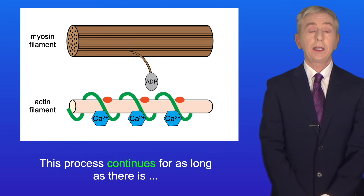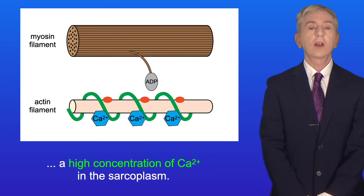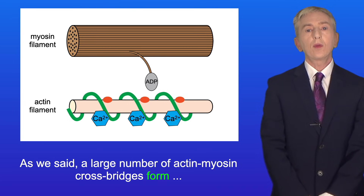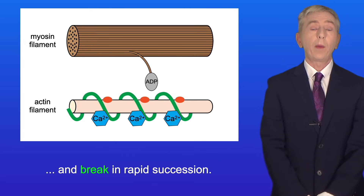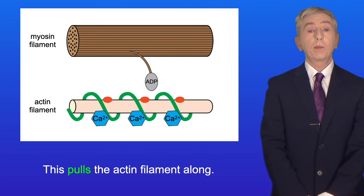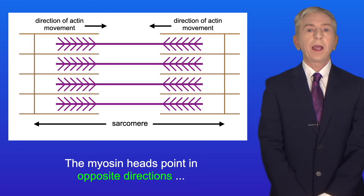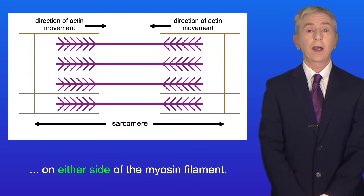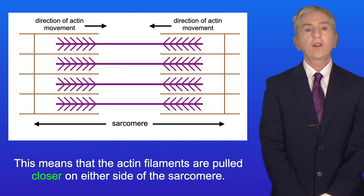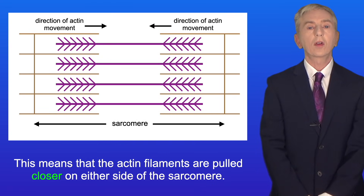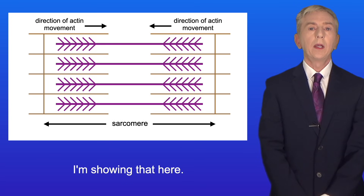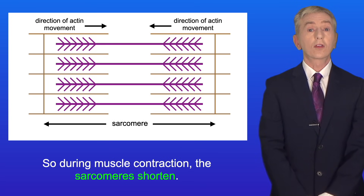This process continues for as long as there's a high concentration of calcium ions in the sarcoplasm. A large number of actin-myosin cross bridges form and break in rapid succession, pulling the actin filament along. The myosin heads point in opposite directions on either side of the myosin filament, meaning the actin filaments are pulled closer on either side of the sarcomere. So during muscle contraction, the sarcomeres shorten.